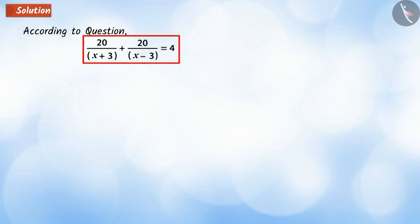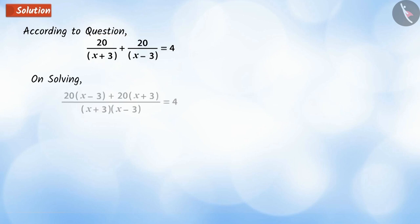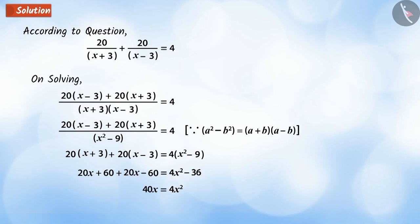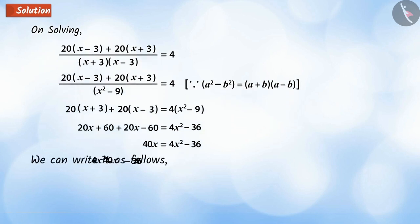According to the question, Tarun spent 4 hours on the ship. That is, by simplifying the above equation, we get 40x equal to 4x to the power of 2 minus 36. It is denoted by equation 1, which is a quadratic equation.